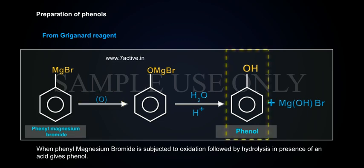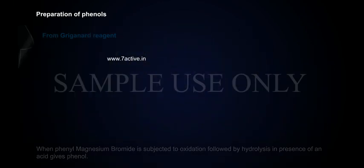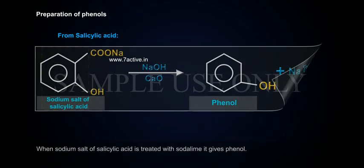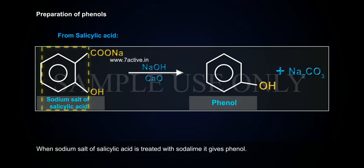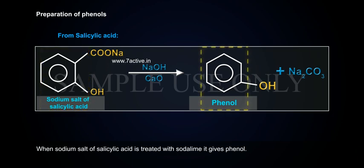From Grignard reagent: When phenyl magnesium bromide is subjected to oxidation followed by hydrolysis in the presence of an acid, it gives phenol. From salicylic acid: When the sodium salt of salicylic acid is treated with soda lime, it gives phenol.